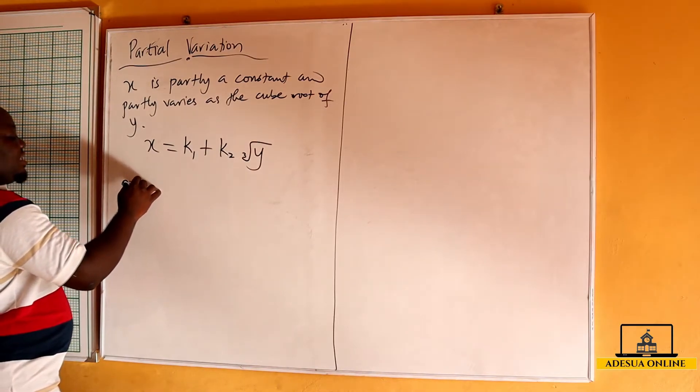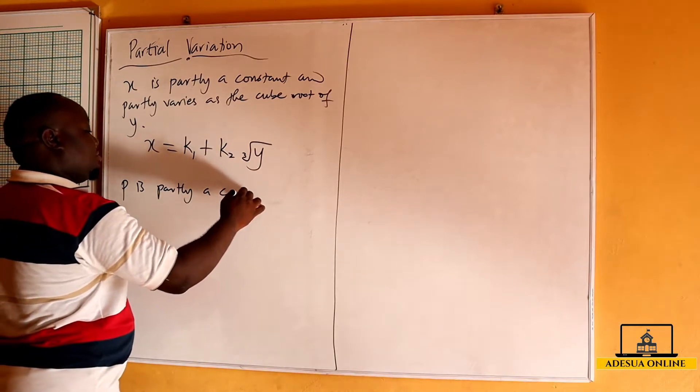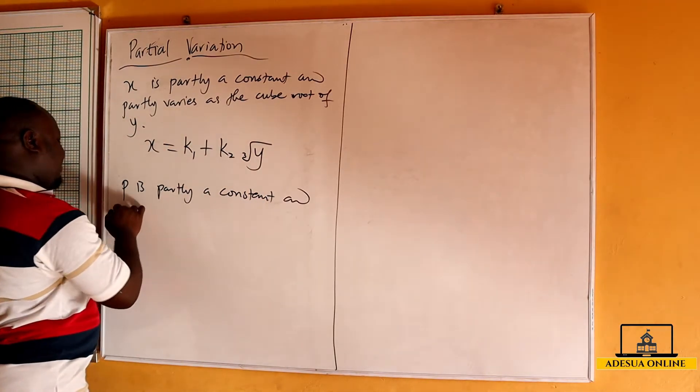Now another example is p varies, or p is partly a constant and partly varies.